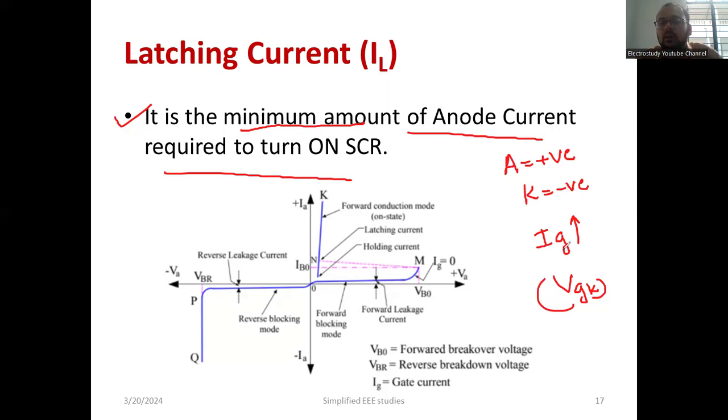Therefore, the device will become completely conductive. That means at this particular point, VBM means forward brake over voltage. At this point, immediately the device will be starting. The device from this point you can see dotted mark I mentioned here now. Immediately if you provide the gate current, it will reach up to this particular state and the device will be continuously turning on.